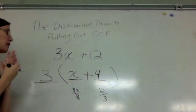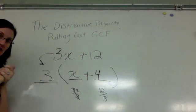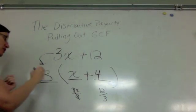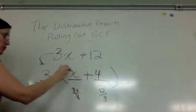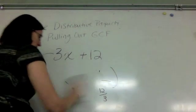So the rainbow property in reverse, I would go from here to here. 3 times x plus 4. And of course, I can check my answer by distributing through and taking 3 times x, 3 times 4, and I would get 3x plus 12. Let's do another example.